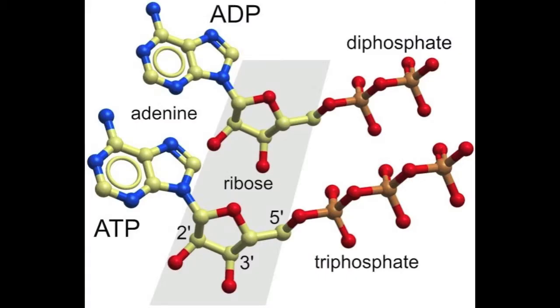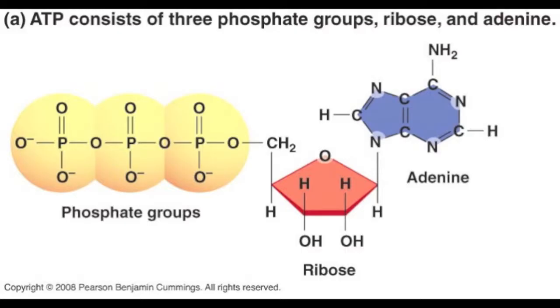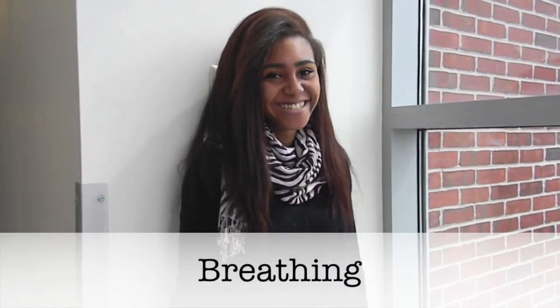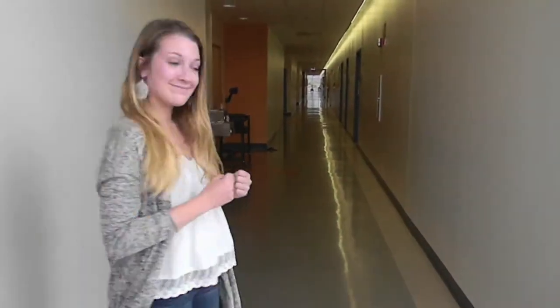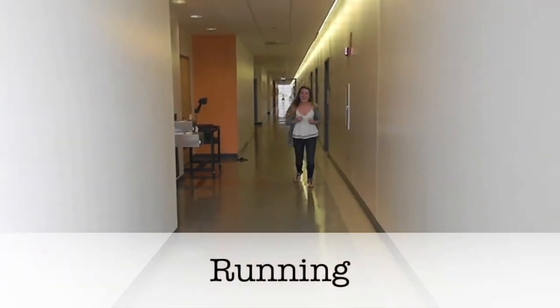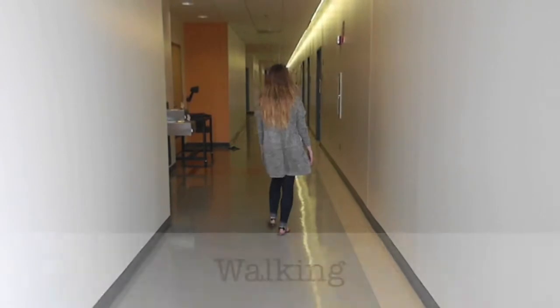Now that we've discussed ATP, let's talk about ADP. ADP, or adenosine diphosphate, is a nucleoside diphosphate formed by adding two phosphates to the 5' carbon OH group of adenosine. ATP has three phosphate groups and ADP has only two phosphate groups. Many of our everyday activities are fueled by the release of energy from the hydrolysis of ATP to ADP, such as breathing, running, walking, or jumping jacks.